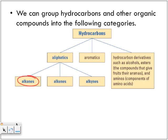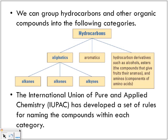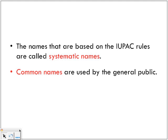We'll give a brief look at the aromatics, but our focus is going to be on the aliphatics and the alkanes. We'll use the International Union of Pure and Applied Chemistry — the IUPAC. The IUPAC has developed a set of rules for naming compounds within each category. In previous lessons you looked at how to name binary ionic compounds, transition metals, polyatomics, acids and bases — but now we're going to look at how to name hydrocarbons: compounds that contain carbon and hydrogen atoms.